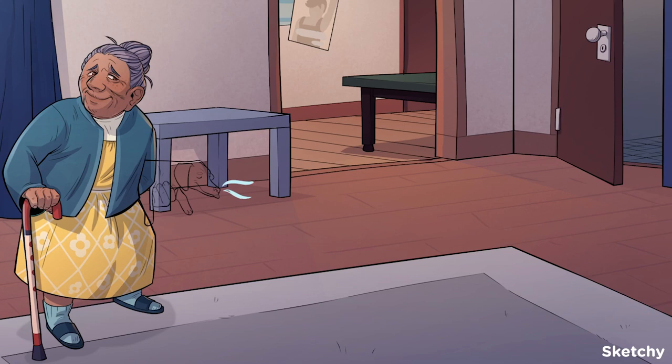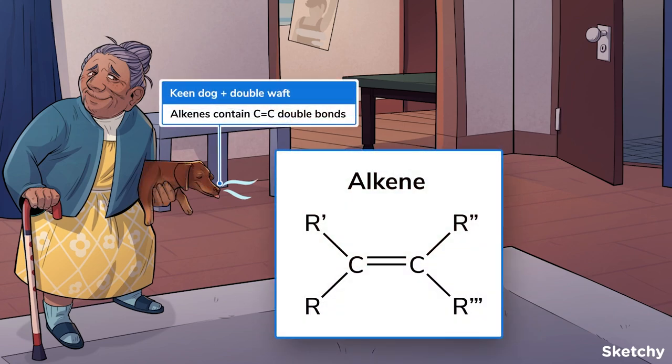Alkenes are similar to alkanes, except they include at least one carbon-carbon double bond. Alkenes are named pretty similarly to alkanes — the Greek prefixes are exactly the same, but they get an "-ene" suffix, E-N-E, when they're the parent chain, and "-enyl", E-N-Y-L, when they're a side chain. To represent that alkenes have carbon-carbon double bonds, the wiener dog with a keen sense of smell is taking in a double sniff of something funky in this dorm.